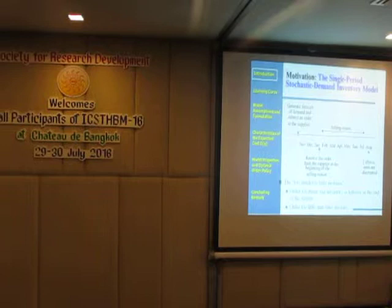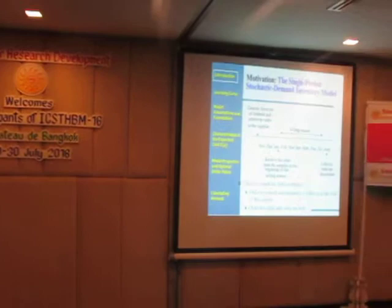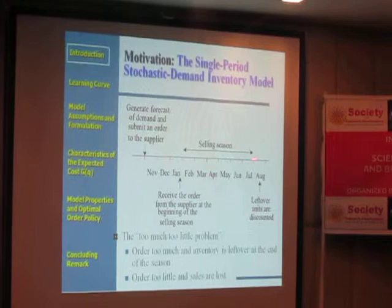For example, the selling season starts at the beginning of February and ends at the end of July. The company has to place an order before the selling season. How soon they have to place the order depends on the delivery time — say, three weeks. So they place the order at the beginning of November so that the order arrives at the beginning of the selling season.